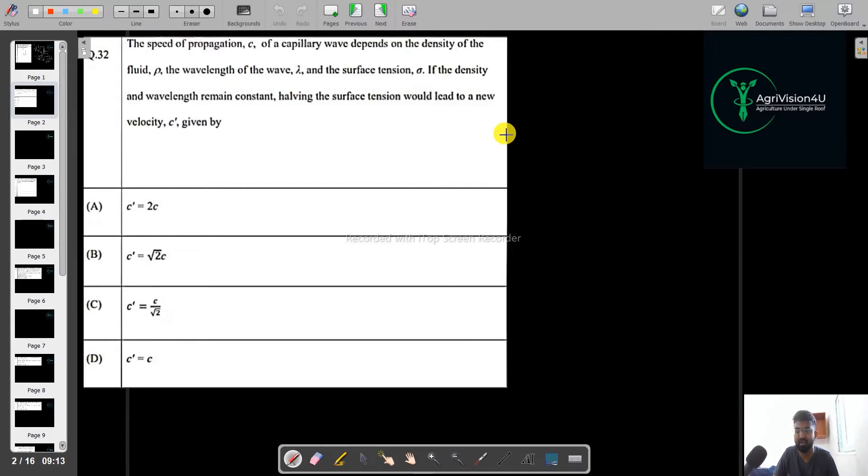This question is basically according to me a little bit out of syllabus because the syllabus of this particular section is not given in the syllabus but we should know the one formula. Before that, I will first read the question: the speed of propagation C of a capillary wave depends on the density. It is a function of density of fluid, the wavelength of the wave, the surface tension. If the density and the wavelength remains constant, then having the surface tension would lead to a new velocity C dash.